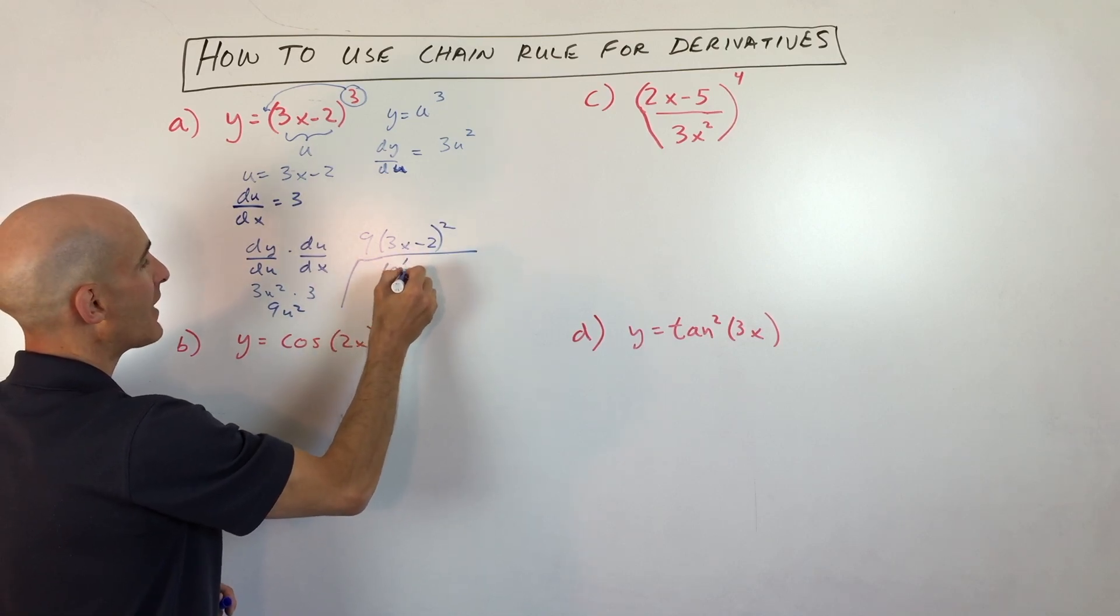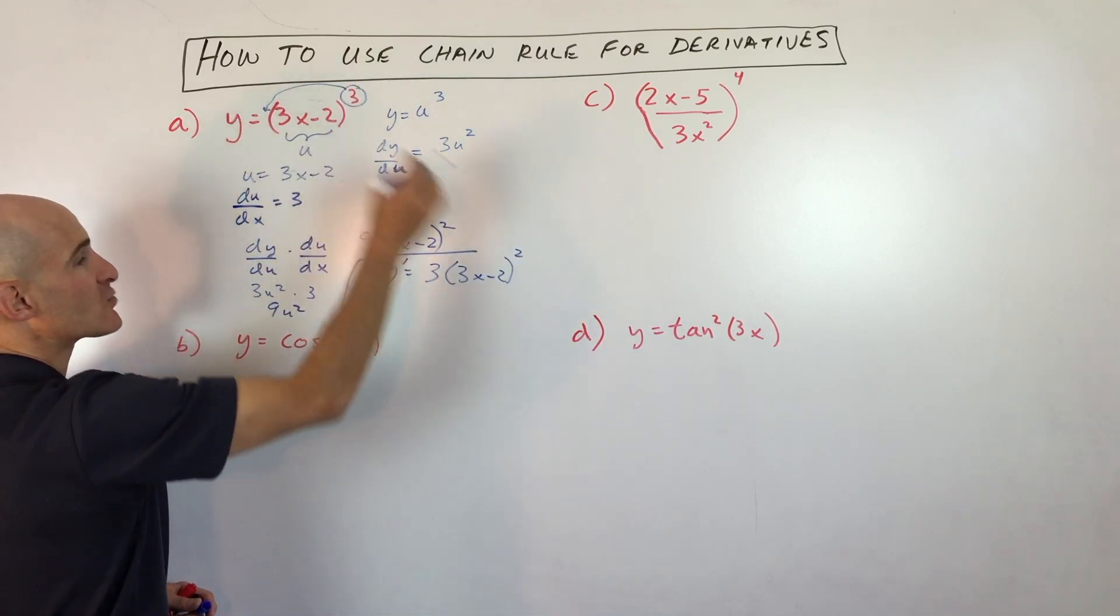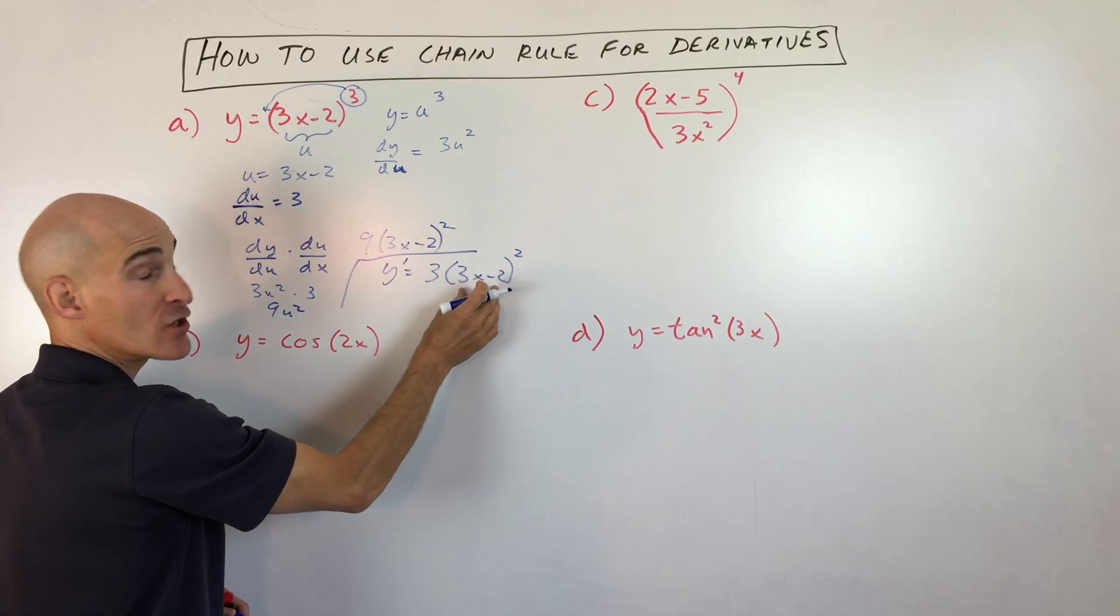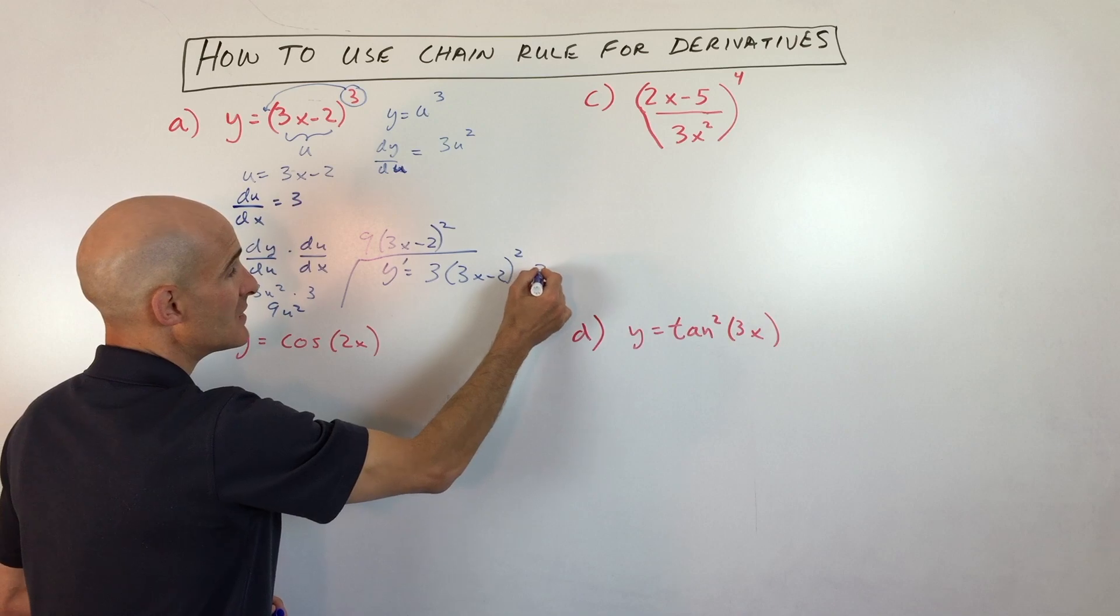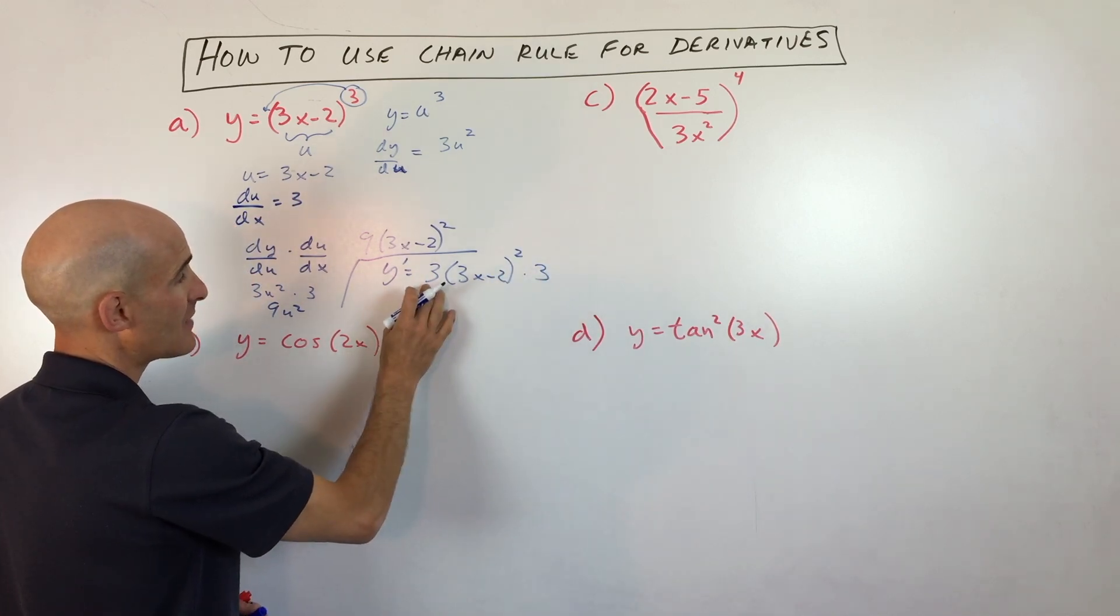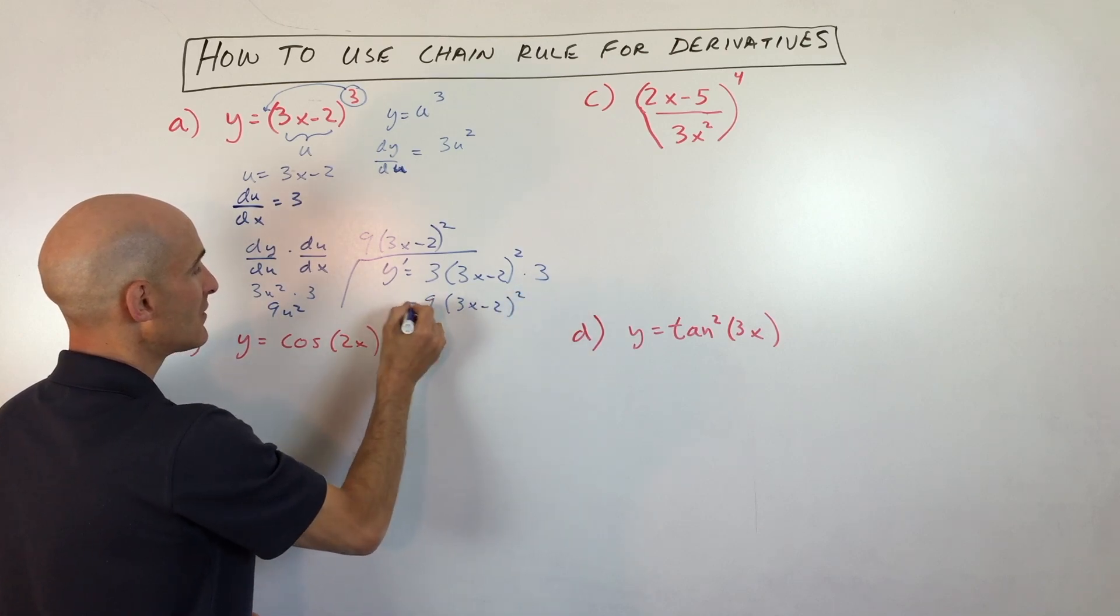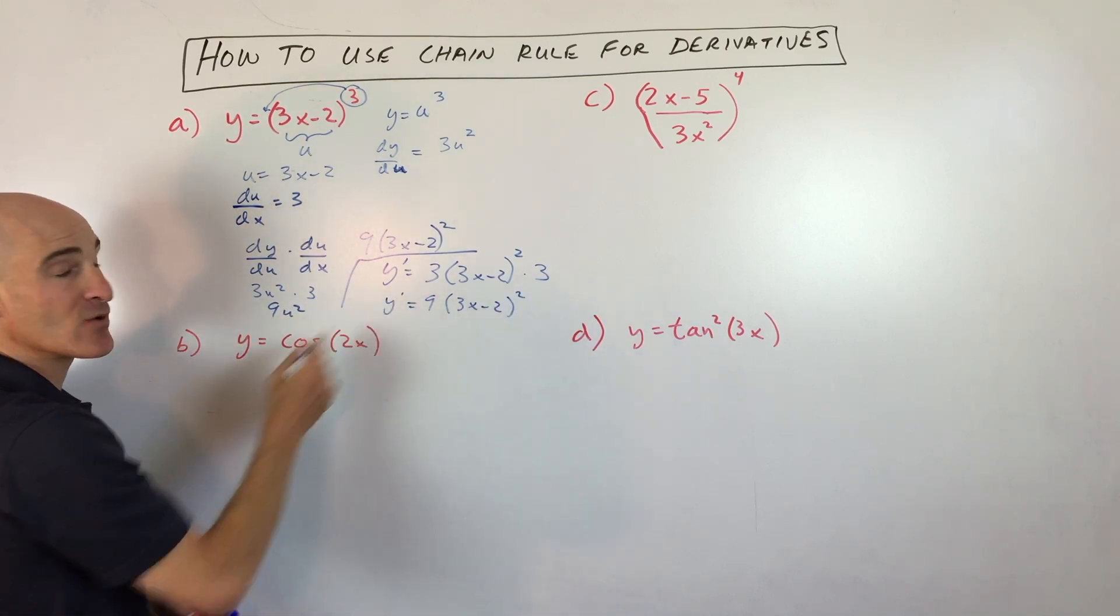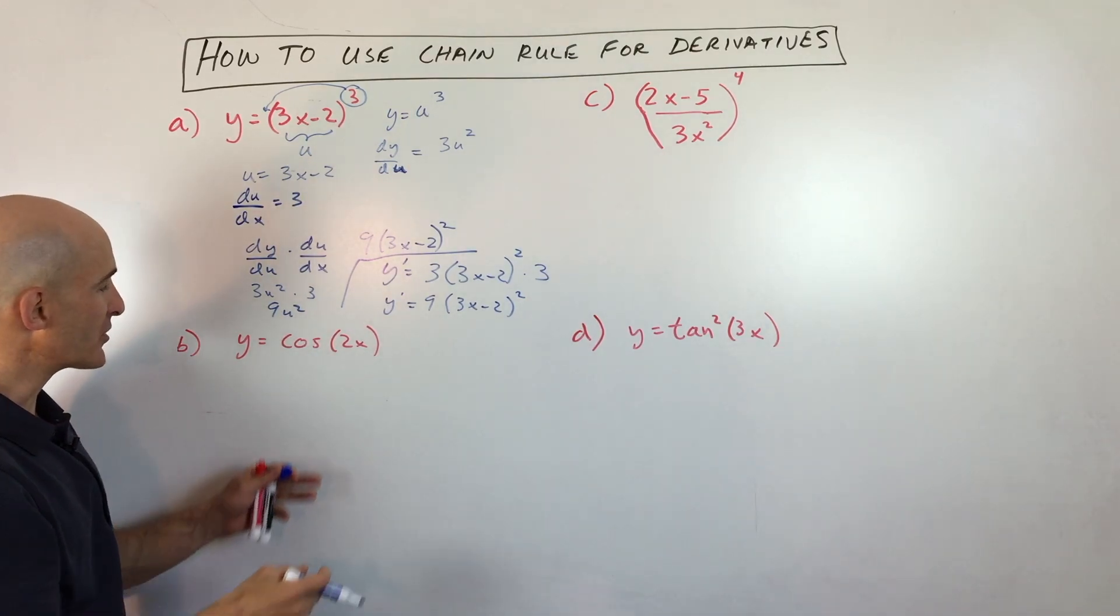So you've got y prime equals 3 times (3x minus 2) squared. All I did was bring down the 3 and subtract 1 from the exponent. Then you take the derivative of the inside. The derivative of 3x minus 2 is 3. So 3 times 3 gives you 9, and then (3x minus 2) squared. That's your derivative. You can see that was a lot faster. Let's take a look at a couple more examples.